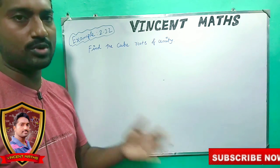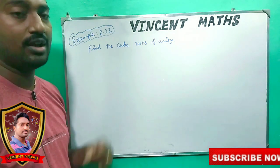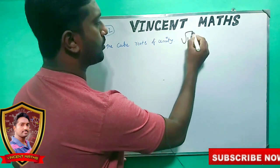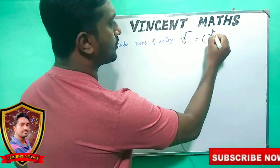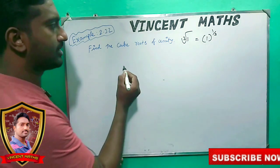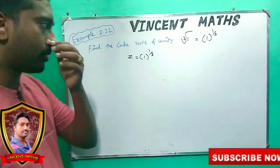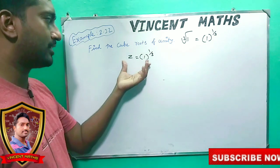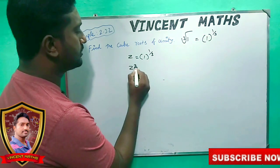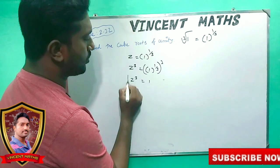In Tamil, that is the cube root of 1, meaning 1's cube root. Find the cubic root: 1 power 1 by 3. We will find z equal to 1 power 1 by 3. Then z cubed equal to 1, since the power 3 cancels.